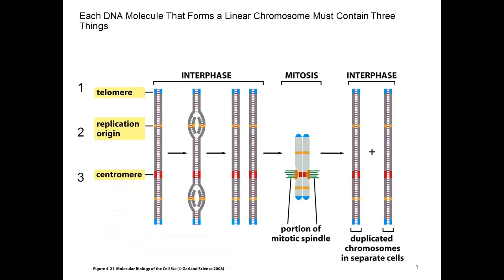There are three essential components to any chromosome: the telomere, replication origin, and the centromere. We've already met the centromere when we saw the pictures of karyotypes and the way that the chromosomes were aligned. The centromeres are the center part of the chromosome, and it'll be to these features which the mitotic spindle will attach, and will help pull and separate the two chromosomes from each other during cell division.